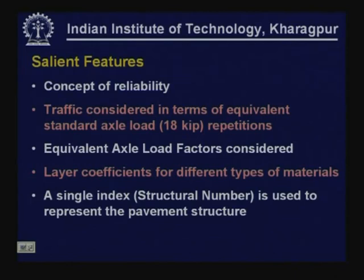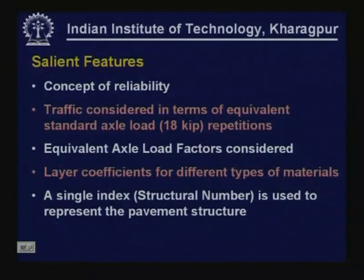For converting axle loads that are not 18 kip — whether 10 kip, 24 kip, or any other load obtained from axle load surveys — these loads are converted into equivalent number of 18 kip repetitions using equivalent axle load factors. Guidelines are available for selecting these equivalent axle load factors, using which we can convert a given traffic volume into equivalent number of standard axle load repetitions.